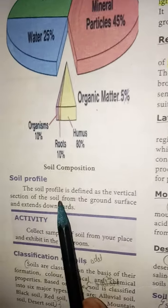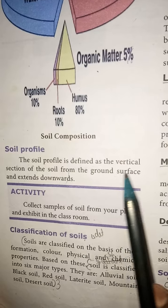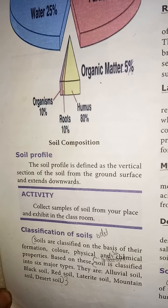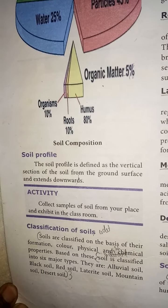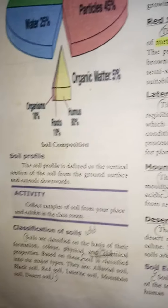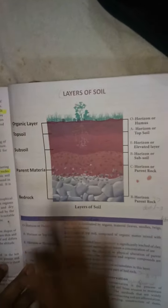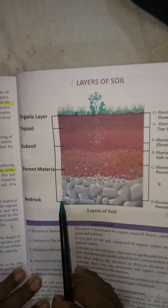Soil profile. The soil profile is defined as a vertical section of the soil from the ground surface that extends downwards. This is the soil profile, showing the layers of soil from the ground surface extending downwards.